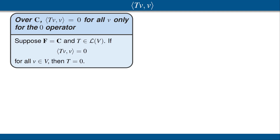Our next result states that on a complex inner product space, an operator T is zero if and only if T(v) is orthogonal to v for every vector v. This result is not true on real inner product spaces. For example, consider the operator on R² that is rotation counterclockwise by 90 degrees. For that operator T, T(v) is indeed orthogonal to v for every vector v in R², however T is not the zero operator. Please read the proof of this result in the book.